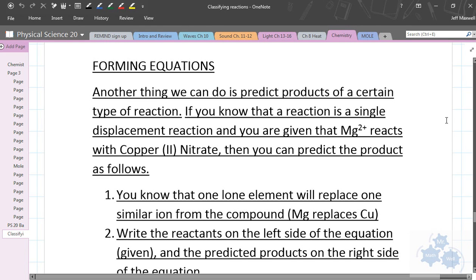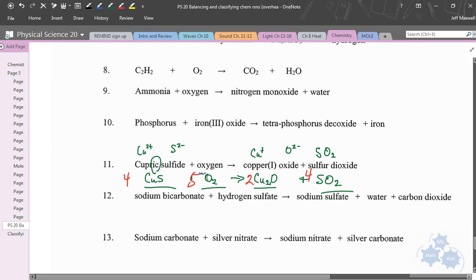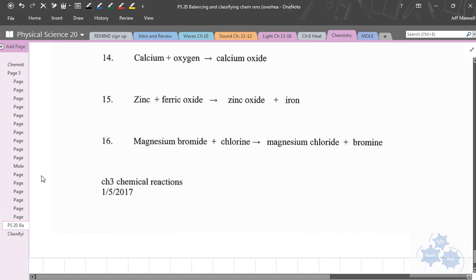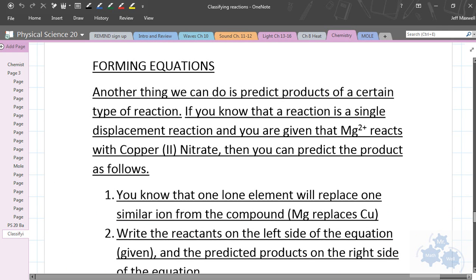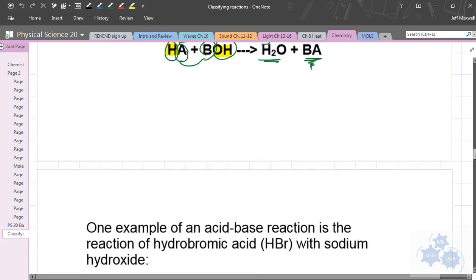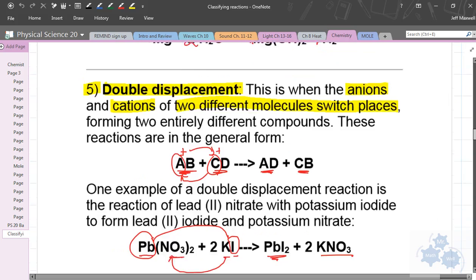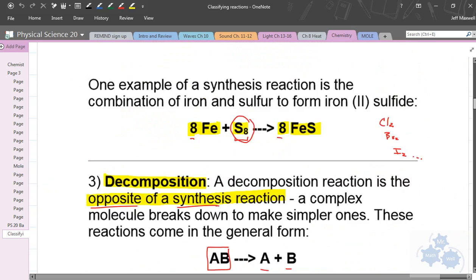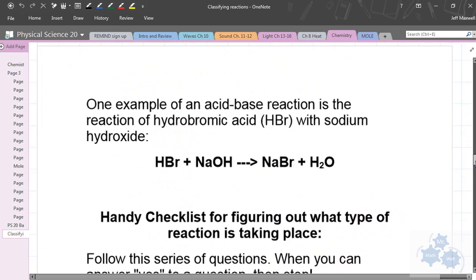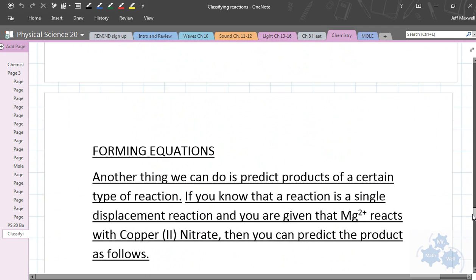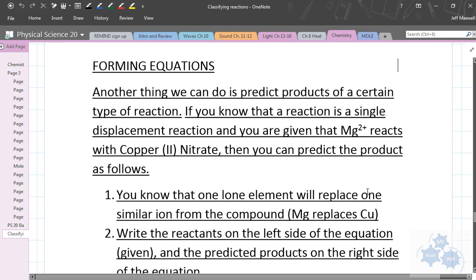So today we've talked about classifying equations. We just kind of got through balancing and talking about where is it now? Oh yeah, up here. We talked about classifying the equations: acid-base, double displacement, single displacement, decomposition, synthesis, combustion. Now what we're going to be able to do is finish an equation given only the reactants and the type of equation.